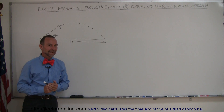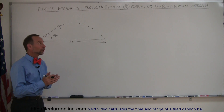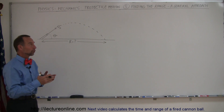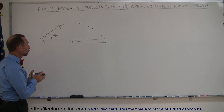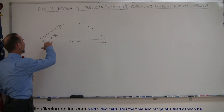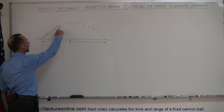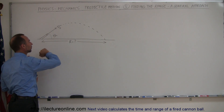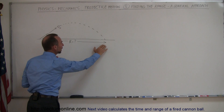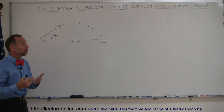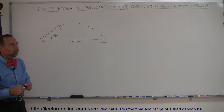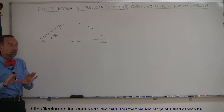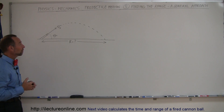Welcome to our lecture. In this example we're going to look at projectile motion in the general format. We're simply going to shoot out a projectile at some initial velocity at some angle theta above the horizontal, and we're trying to find the range of this projectile — meaning how far will it go before it hits the ground. That's known as the range of the projectile, and we follow the same standard procedures.